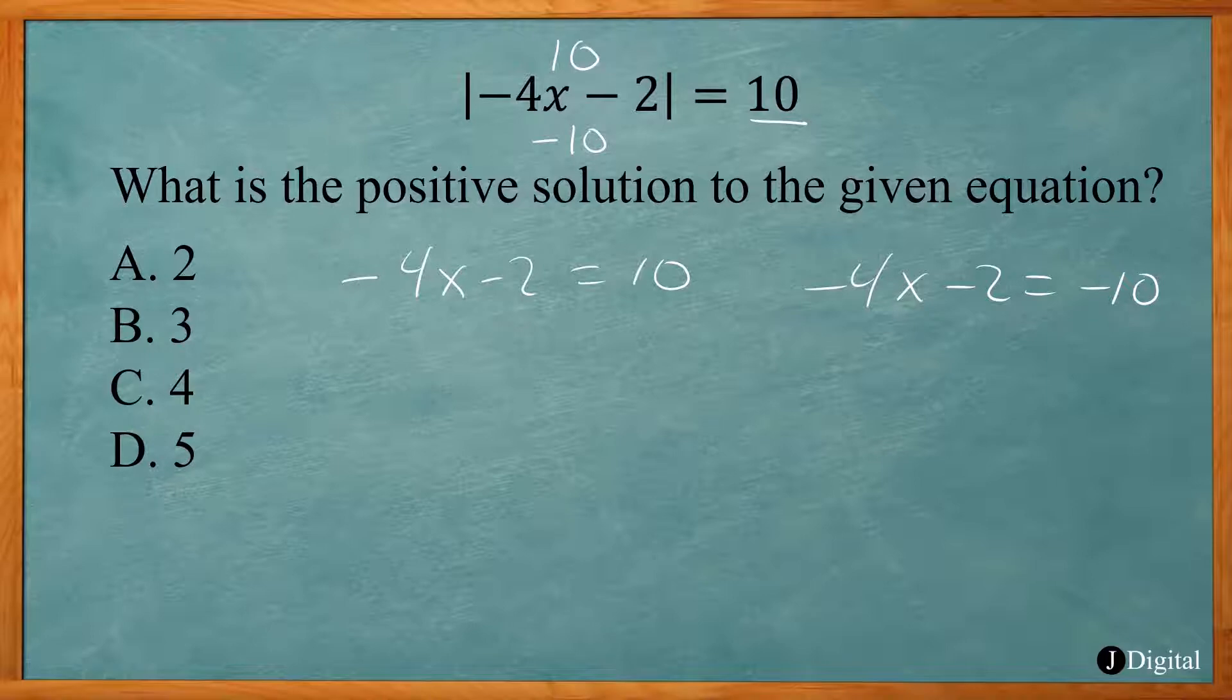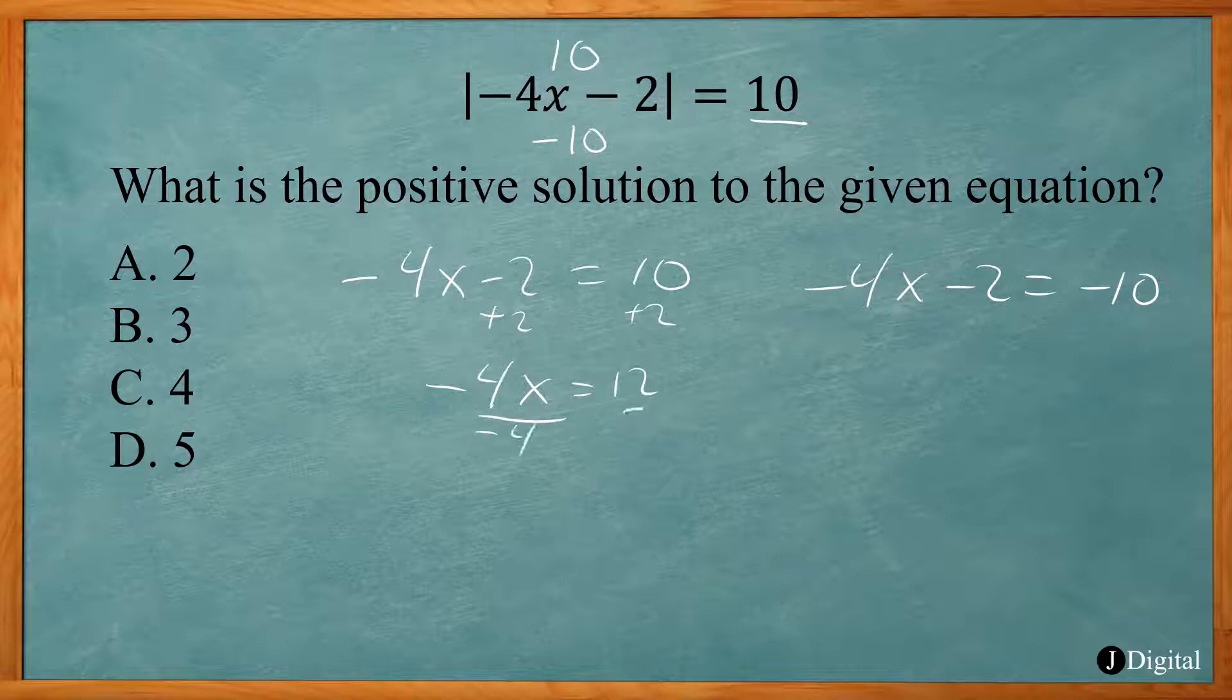So you solve each equation. If you know which one gives a positive result, just do that one. If you can't tell right away, do both. Here I add 2 to both sides. Negative 4x equals 12, divided by negative 4. X equals negative 3. That's our negative result.